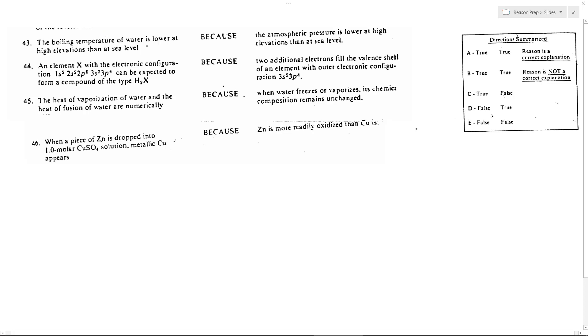Question 43: The boiling temperature of water is lower at high elevations than at sea level. This is true because as your elevation increases - as you go higher and climb a mountain - your air pressure and atmospheric pressure decreases. The air gets thinner as you get higher and higher.